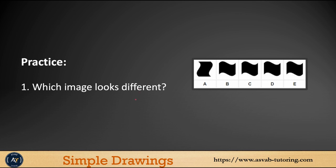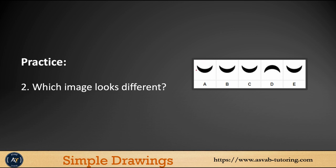Now there are some practice problems — try by yourself. We have the answer key at the end. You could see there are five options, all of them like a wave propagating from left to right, except letter A is going from up to down. Try to identify which image looks different. If you can identify it easily, you can definitely do it; if not, look at the answer key at the end.